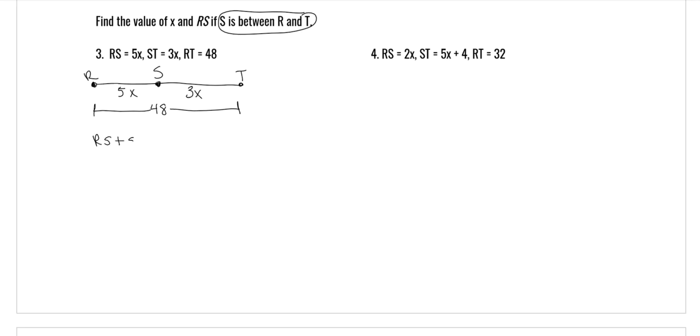So RS plus ST is equal to RT. RS is 5x, ST is 3x, and RT is 48. And then you combine like terms, so 5x plus 3x is 8x. Divide both sides by 8. And x is 6, which it says that's one of the things we have to find. And in geometry you always go back and look, because frequently you're not just looking for that variable, you're looking for something else. So we're also looking for RS. RS was 5x, which is 5 times 6, which means that RS was 30.